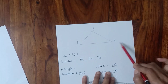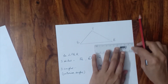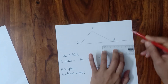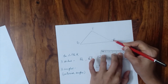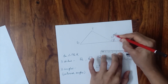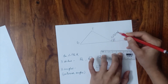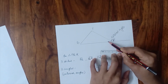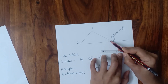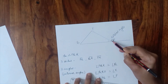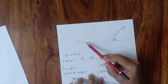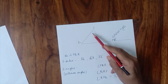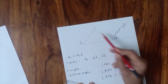Now let us discuss one very important property of a triangle. If you extend any side of a triangle — in this case I am extending side QR — the angle formed outside the triangular region is called the exterior angle. The angle next to it is called the adjacent angle.